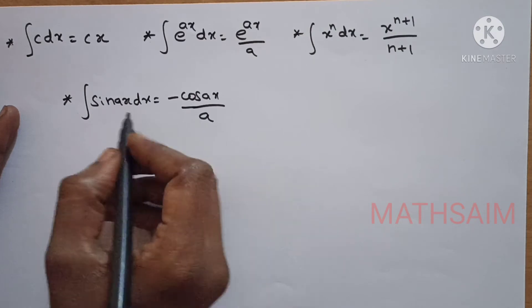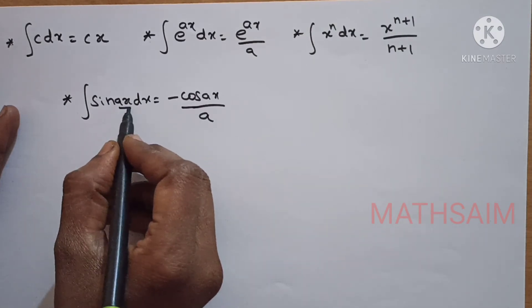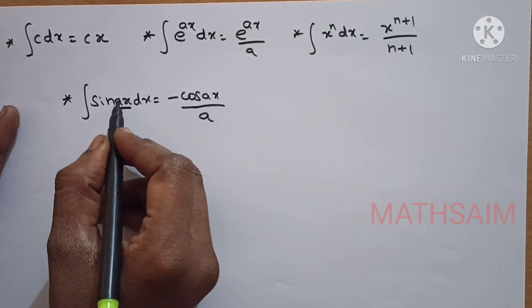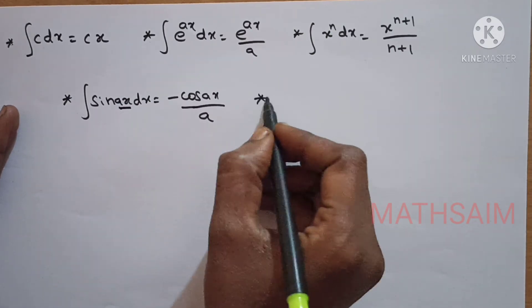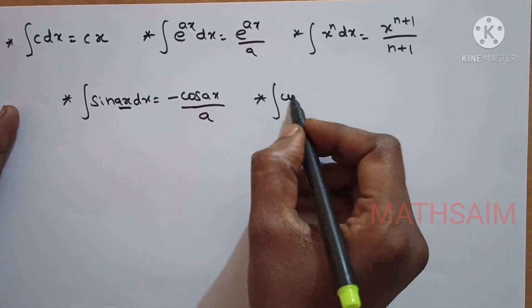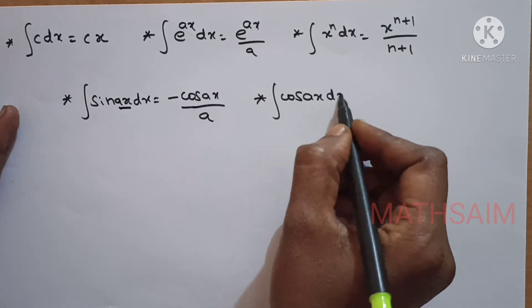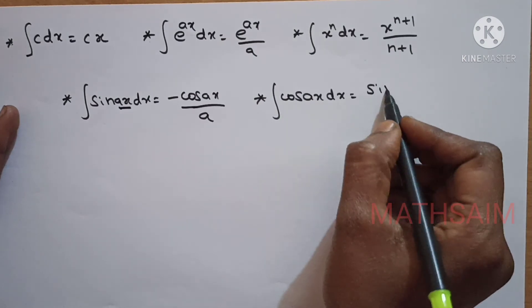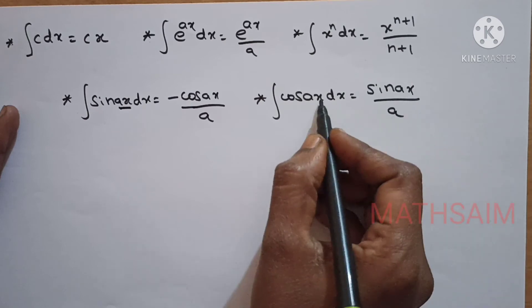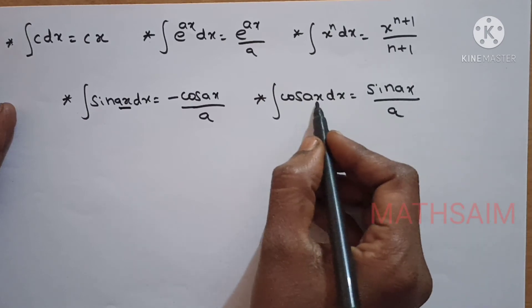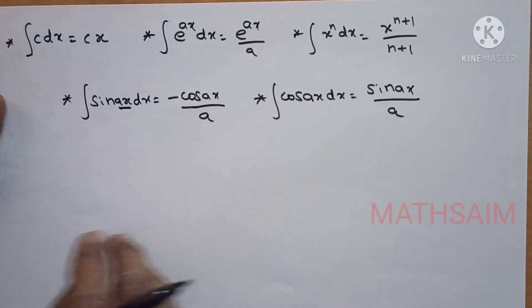Here, 'a' is the coefficient of x. This is x — same thing. Coefficient of x applies to the cos term as well. Okay? That's all.